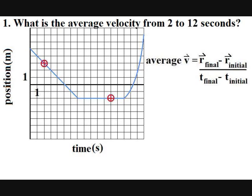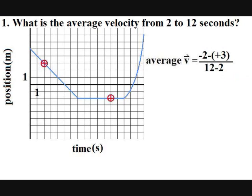Once again, change is final minus initial. So the change of position is the final position, negative 2 meters, minus the initial position, positive 3 meters, equal to negative 5 meters. The change in time is simply the final time, t equals 12 seconds, minus the initial time, t equals 2 seconds.